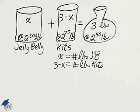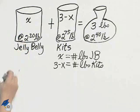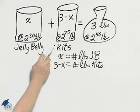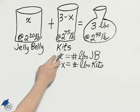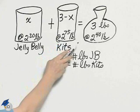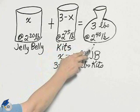In this mixture problem, we will take X pounds of Jelly Belly's. These are worth $2.20 a pound, adding to three minus X pounds of Kits worth $2.75 a pound to get three pounds that is worth $2.40 a pound.